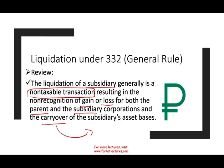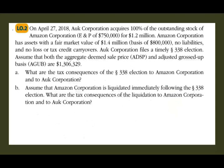Now this is the general rule — a clean-cut rule. You might be saying, what's the point? Well, sometimes it may not be in the best interest of the parties. Let's take a look at this example: on April 27, 2018, a corporation acquired 100% of the common stock of Amazon Corporation. Amazon had 750 EMP and they paid 1.2 million. Amazon Corporation has assets with a fair value of 1.4 million, a basis of 800,000, with no liabilities, no loss or tax credit.